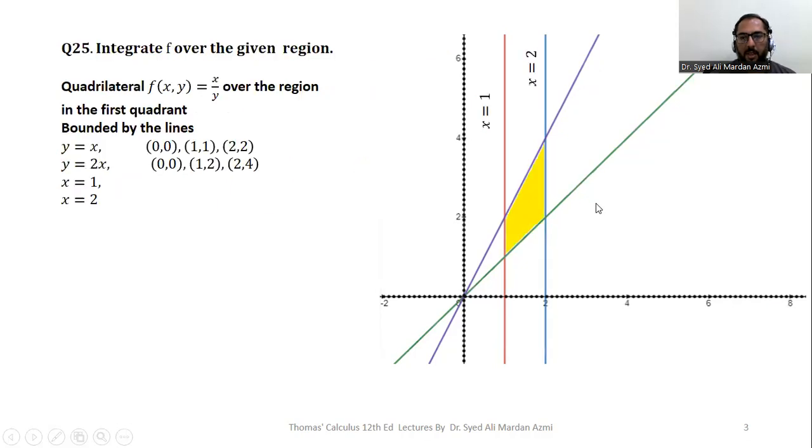In the next step, I have highlighted the common region, the common region which is shaded as yellow. After plotting the region, next step is of integration. We have to integrate f of x, y, x over y over this particular region in the first quadrant, which is a quadrilateral shape.